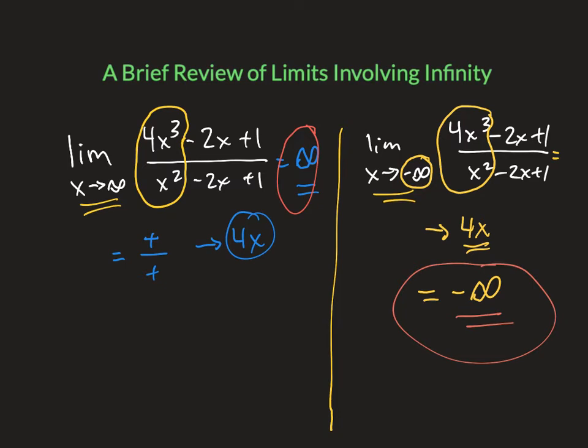When the degree on top is higher than the degree on bottom, we know it's going to be an infinity. There's no asymptote. The limit doesn't exist, but we can describe the limit as either positive infinity or negative infinity by examining the end behavior model of those leading terms.